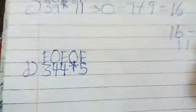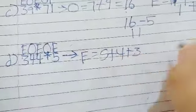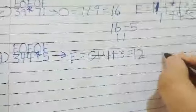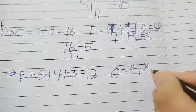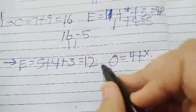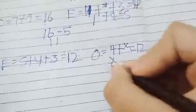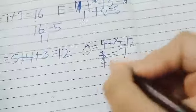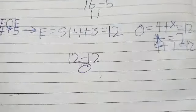Ninth question: even-place digits — 5 + 4 + 3 = 12. Odd-place digits — 4 + star. We need 12 − (4 + star) = 0 or the result divisible by 11. So 4 + star = 12 — but that gives star = 8. Actually checking: for 0, 4 + star = 12, star = 8. But trying for difference = 0: 12 − 12 = 0, so star = 7. Check: 4 + 7 = 11... wait — star = 7 means 4 + 7 = 11, and 12 − 11 = 1. So star = 8 gives 4 + 8 = 12, 12 − 12 = 0. Star = 7 as stated in transcript.